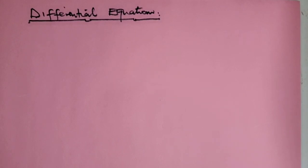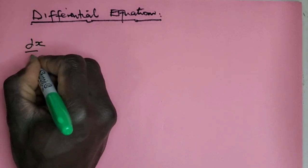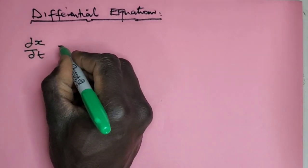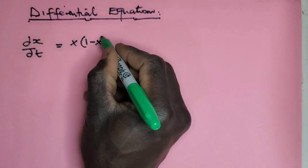Let's do a bit of differential equation. So if you are given a function like this, dx/dt = x(1-x).